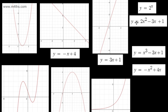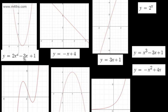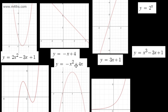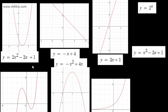If we look at the list, we've got two quadratic equations. y is equal to 2x squared minus 3x plus 1 and y is equal to minus x squared plus 4x. This one is going to be the positive quadratic and this one right here is going to be the negative quadratic. So we've gone ahead and matched those up.